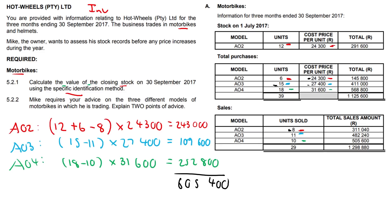Or we could stock more of A04 because our gross profit per unit is highest on this item. Anything along those lines would score you the mark. So to summarize: A02 is performing poorly - either reduce the price or restock; A03 is good; A04 is good as well. We want more of these products, especially A04 because it has the highest gross profit.